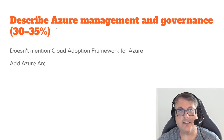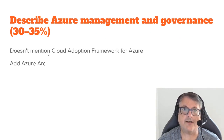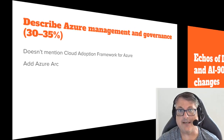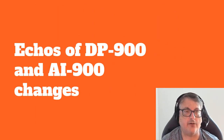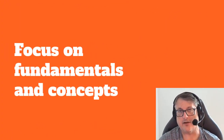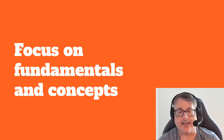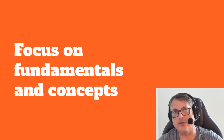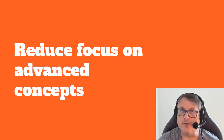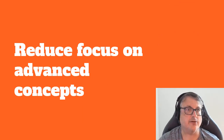The third section talks about management and governance. They removed a whole bunch around SLAs and no longer mention the cloud adoption framework. Now they're talking about using Azure Arc, which was introduced a few years ago and is becoming more mainstream. This reminds me of the DP-900 and AI-900 changes — they're really focusing on fundamentals and concepts, and getting away from advanced and detailed things. Maybe people were finding topics like firewalls to be a little too complicated for a fundamentals exam.